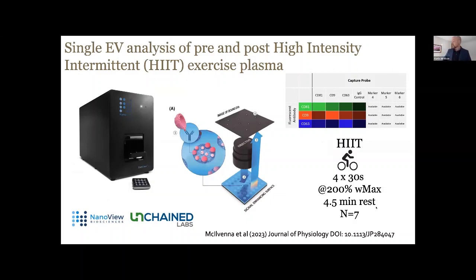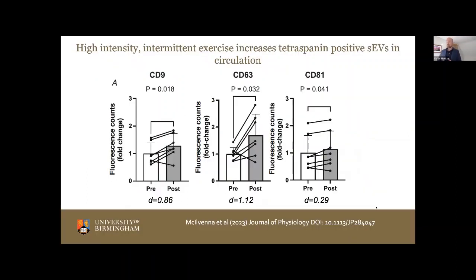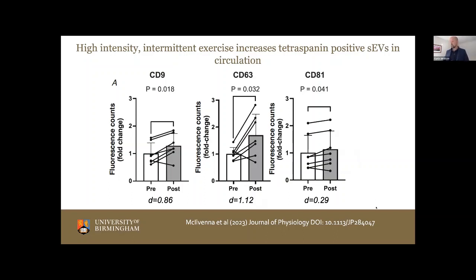We've also analyzed platelet-free plasma in individuals carrying out high-intensity intermittent exercise using the excellent ExoView instrument, which circumvents the need for a pre-isolation step. We load fresh plasma — actually frozen plasma — onto these microchips. The microchip immobilizes the EV and then through immunofluorescence literally counts tetraspanin-positive vesicles. The take-home: we see an increase in the number of CD9, CD63, and CD81-positive EVs with the exercise bout with medium to large effect sizes. I'd like to thank my collaborators and co-workers.